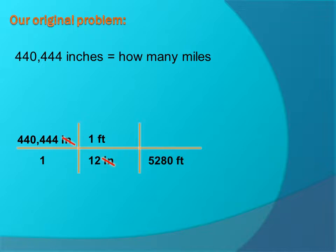And then we know our conversion from feet to miles. There's 5,280 feet for every 1 mile. So again, we put feet on the bottom because that's what we're trying to get rid of, and mile on the top because that's what we're trying to end up with. So we do 440,444 divided by 12 divided by 5,280.